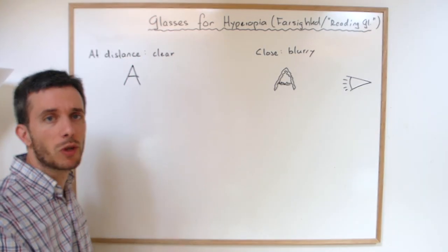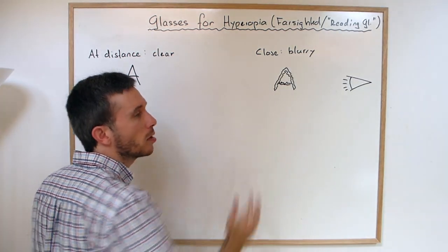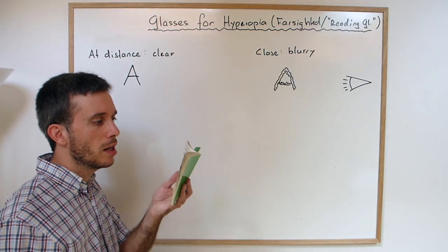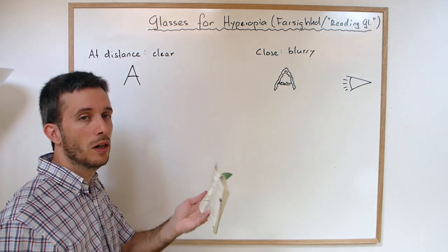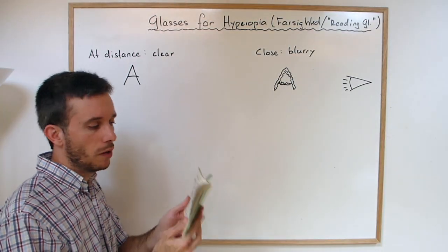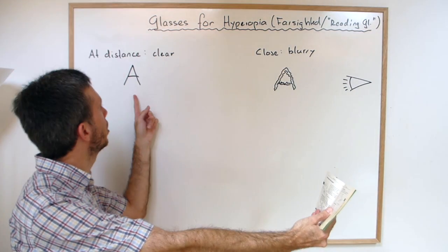So what is the problem in this case? The problem is that they cannot see anything close up sharply. So if they try to read a book like this, either it's just not sharp or it gives them very quickly a headache because they have to really squeeze their muscles. However, if the object is a bit further away, they see extremely clearly.